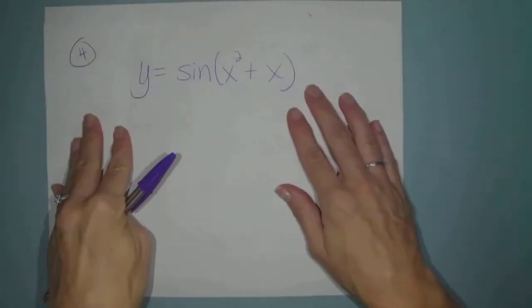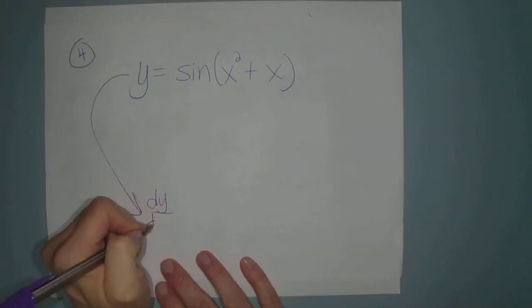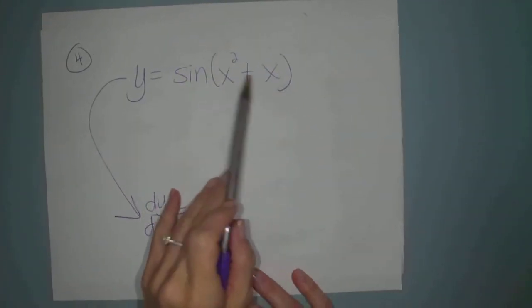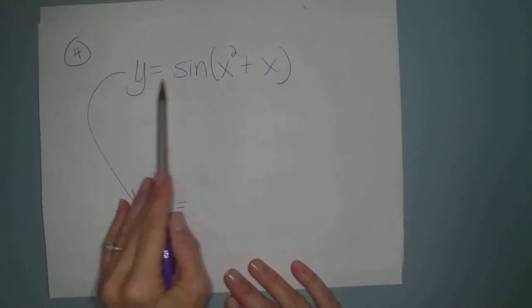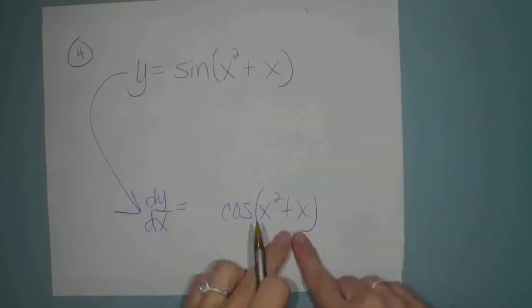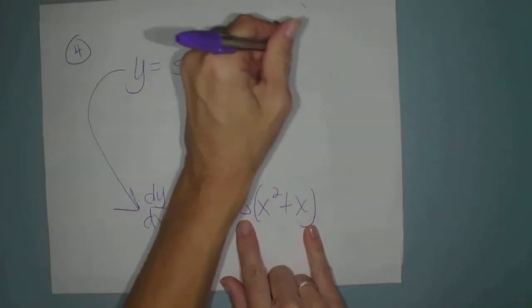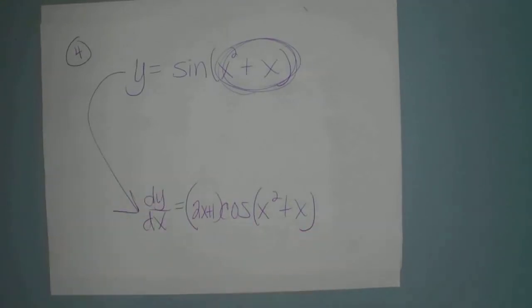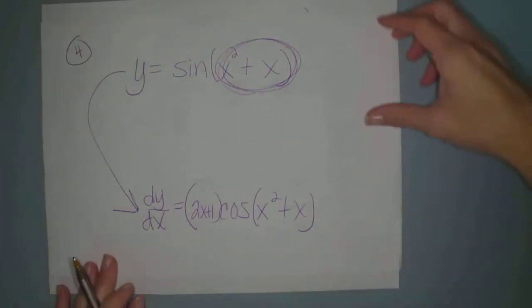Let's use the shortcut on example four. The original problem is y equals sine of (x² + x). Using the outside-inside rule: the derivative of sine is cosine, so we get cosine of (x² + x). Then we multiply by the derivative of the inside, which is 2x + 1. So the answer is (2x + 1) times cosine of (x² + x). See how easy that is?